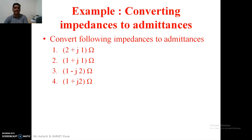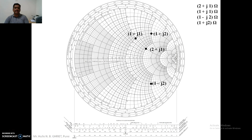Similarly, another assignment related to this is the conversion of the impedances to the admittances. The procedure is the same — first we need to plot the impedances, and then we can convert these impedances to the admittances. I have already taken the impedances which were plotted in the previous slide. We will convert these impedances into admittances. I will start with 2 plus J1.